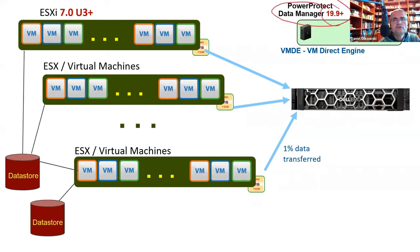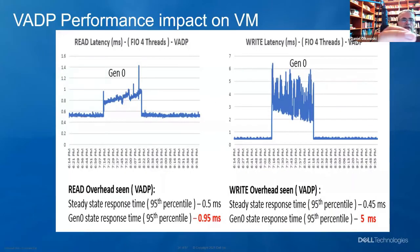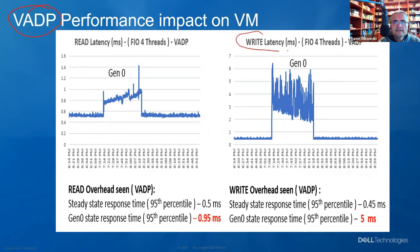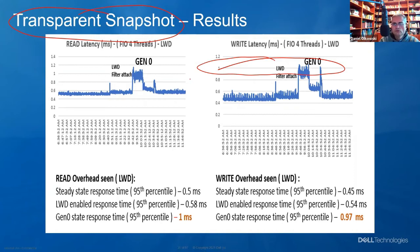The requirements are simple: Power Protect Data Manager 19.1 or higher, and ESX server 7.0 Update 3 or higher — just two requirements. Regarding latency comparison: with the existing VADP method during a backup, a database or file system virtual machine sees write latency of 6-7 milliseconds. With transparent snapshots the latency is about 1 millisecond — less even than RecoverPoint for Virtual Machines. It's almost no latency; the production does not see the backup process.